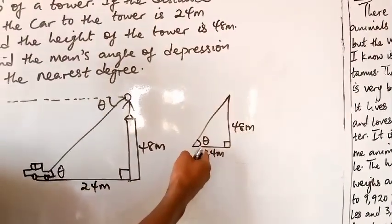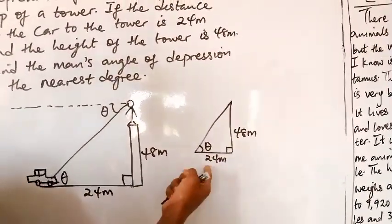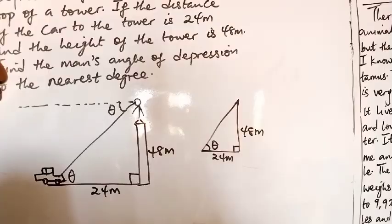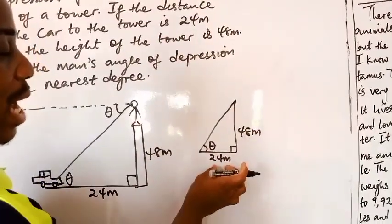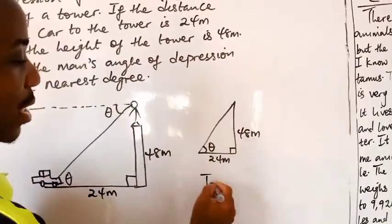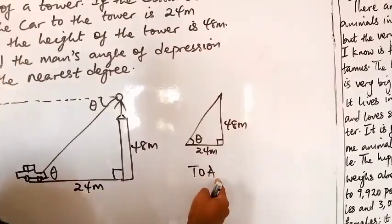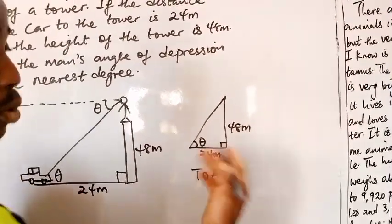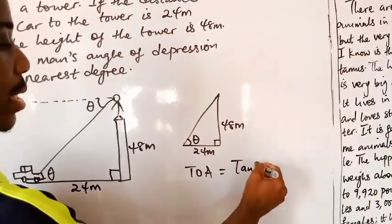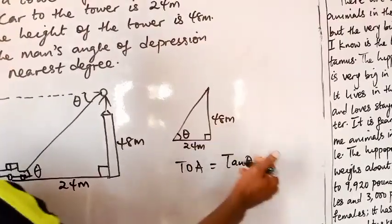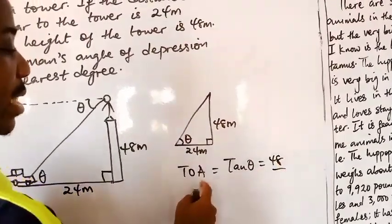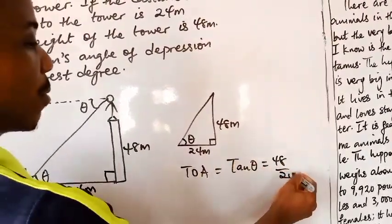Now, the side that faces the theta angle must be the opposite. Then here definitely would be the adjacent. So that means we have opposite and adjacent, so we'll make use of tan. From SOH-CAH-TOA, that would be tan theta equals the opposite, which is 48, over the adjacent, which is 24.